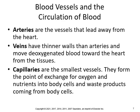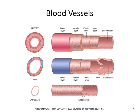Capillaries join the arteries and veins together. Remember: arteries — away; veins — toward. The artery is very muscular and pressurized. If you sever an artery, the blood will be bright red and squirt out with a lot of pressure. If you sever a vein, it's dark purplish and just oozes out.